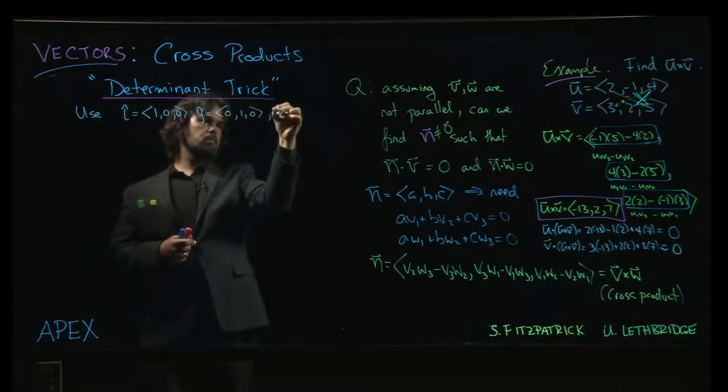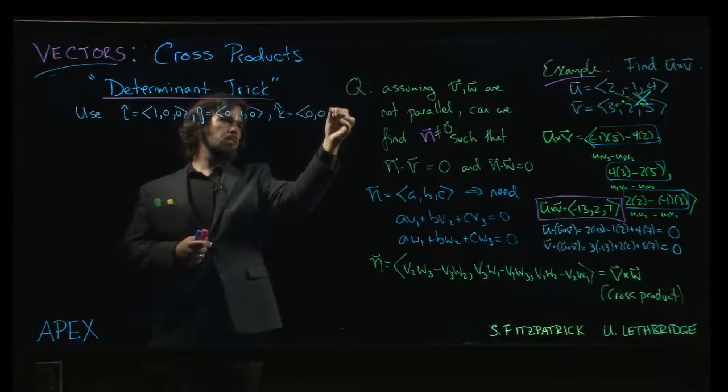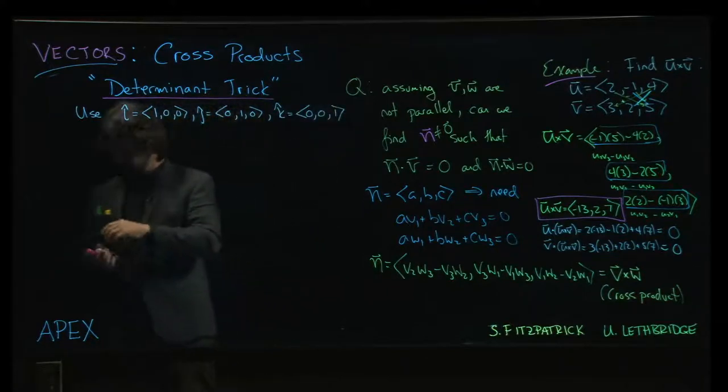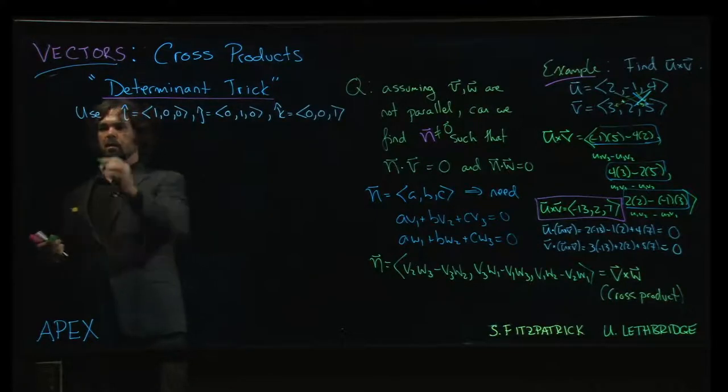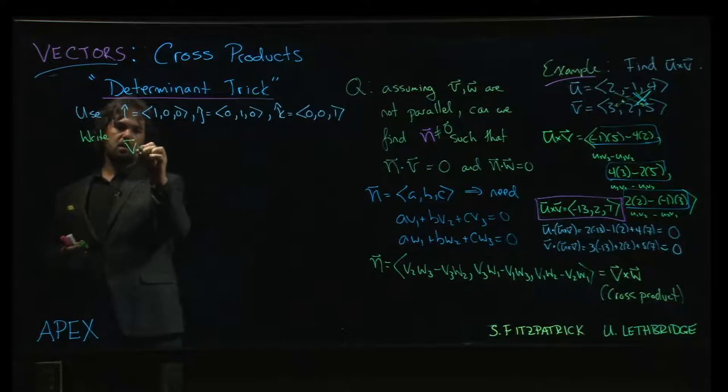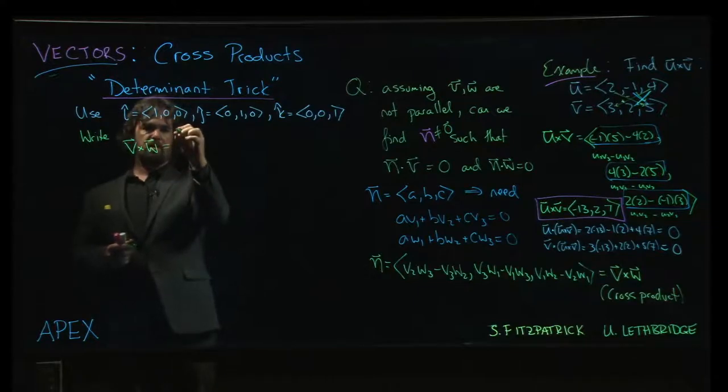What we do is we write the following: for V and W, same as we've been using, V cross W, what we're going to do is write down what is essentially a three-by-three determinant.